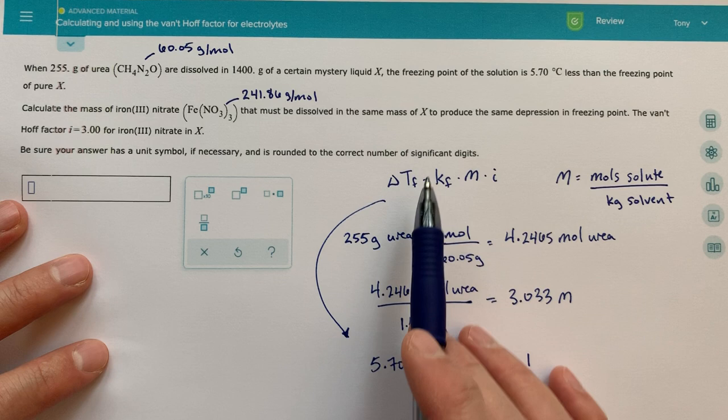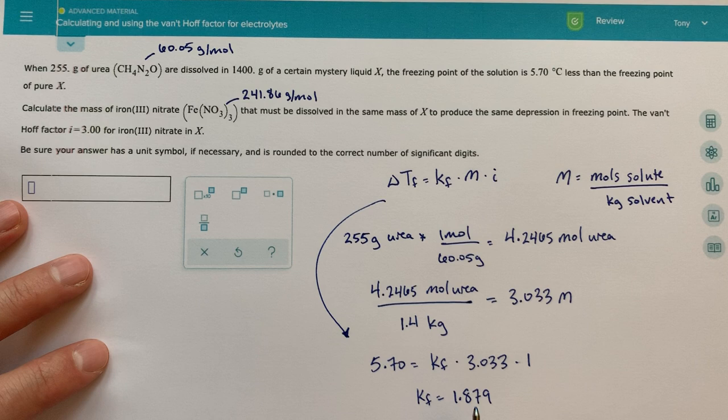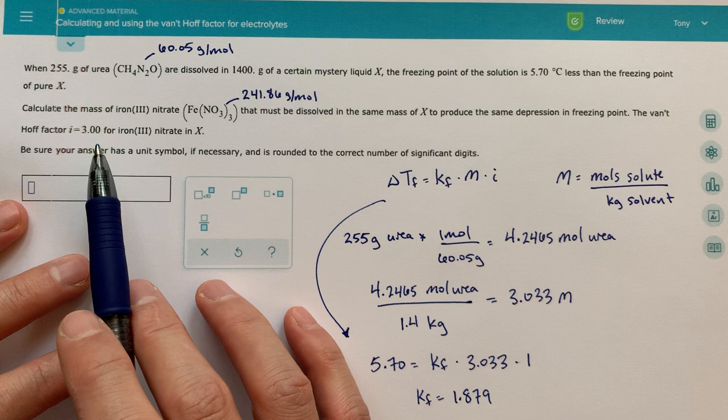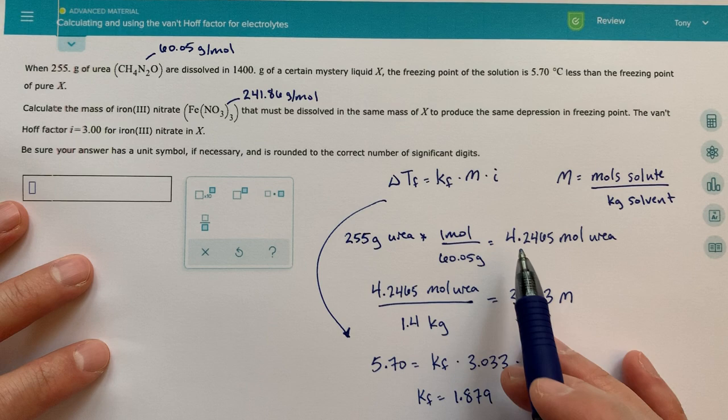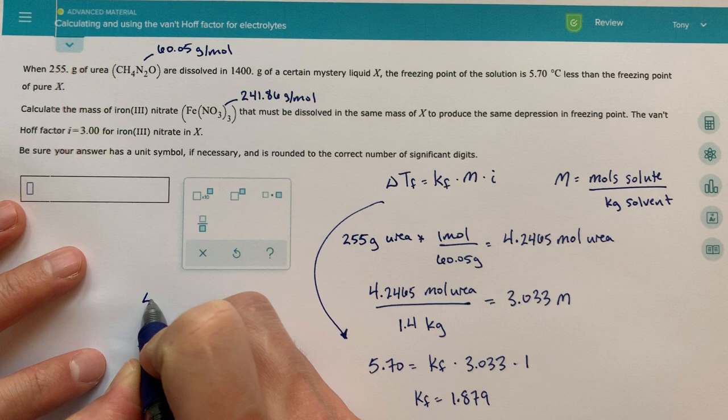We do know what the delta TF is. So it says produce the same depression and freezing point. So we're looking for this 5.7. That's going to be our delta TF. We know what the KF is because we just solved for that here for our mystery liquid. We do not know what the molality is. And we're told what the van't Hoff factor is. We're told that the van't Hoff factor is exactly three for this iron nitrate, which is probably somewhat unrealistic, but this is just for practice.